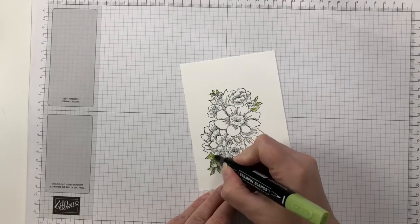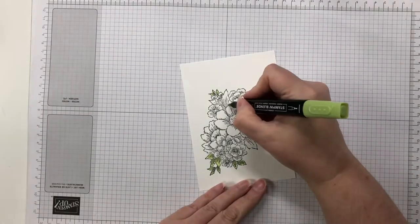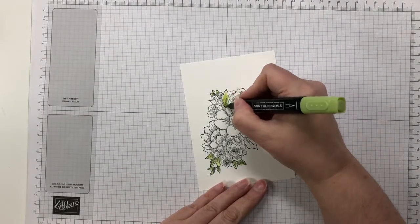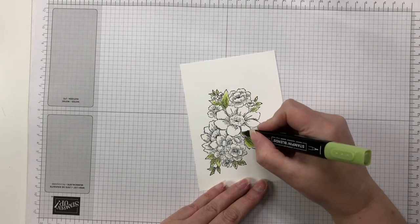But of course you don't have to. We've seen plenty of examples where it's just been stamped in the one color. But I like you can cut it out, you can pop up just elements of it, you can do lots of things with this image basically.